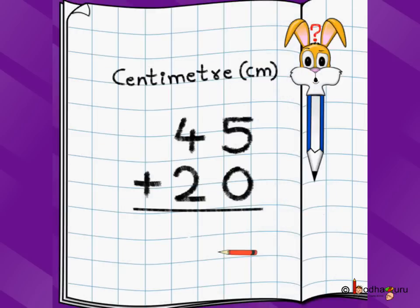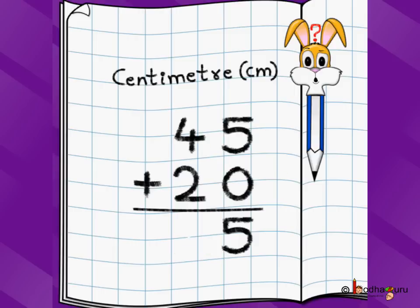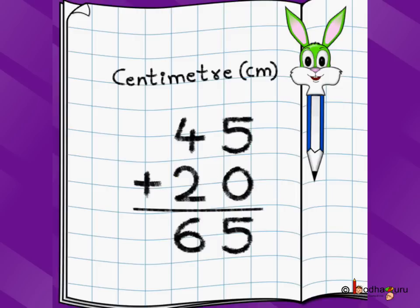Let's take another example. Now we want to add 2 lengths in centimeters. Say we have 45 centimeters plus 20 centimeters. Just like 2-digit addition, we start from the ones position — 5 plus 0 is 5, 4 plus 2 is 6 — so we have 65 centimeters after we add 45 centimeters plus 20 centimeters.